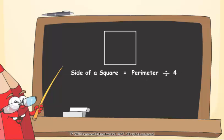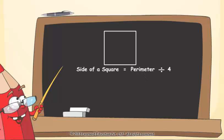Let's find side of a square, whose perimeter is 64 cm. Side of square is equal to perimeter upon 4 is equal to 64 upon 4, is equal to 16 cm.